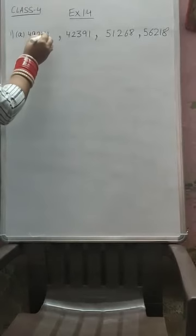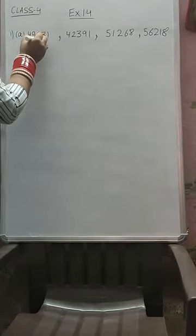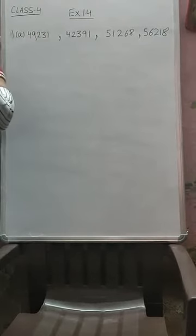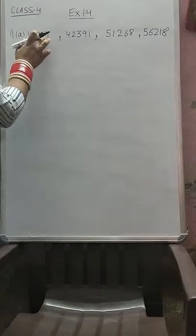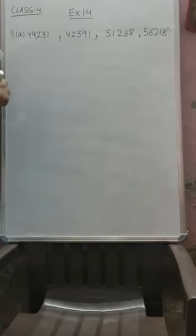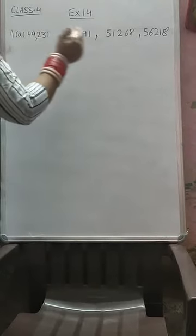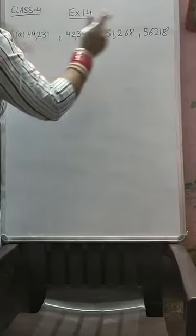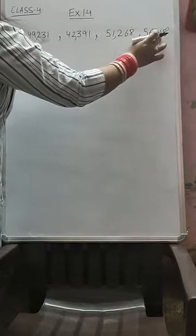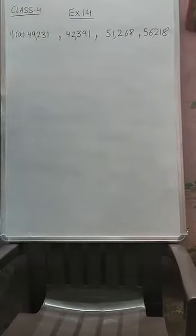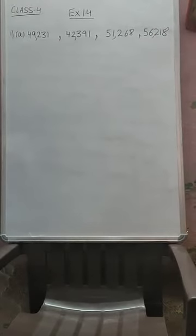According to the Indian system, 1 stands for hundreds. We count 1, 2, 3 from the last and place a comma. Then again 1, 2, 3 — place a comma. And again 1, 2, 3 starting from the last. Here we have placed the commas.